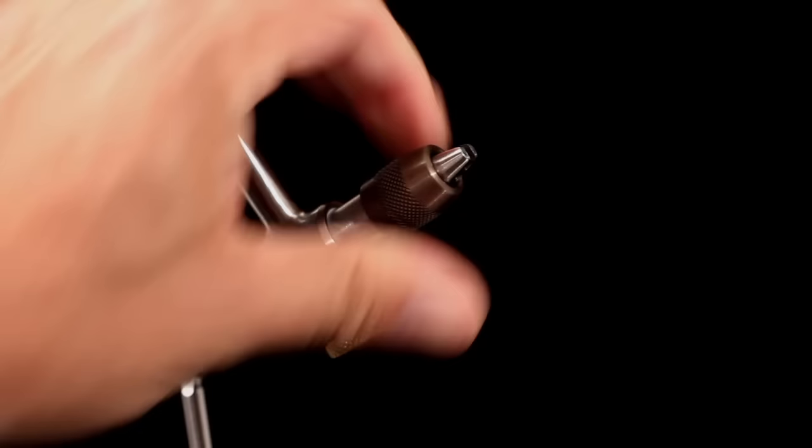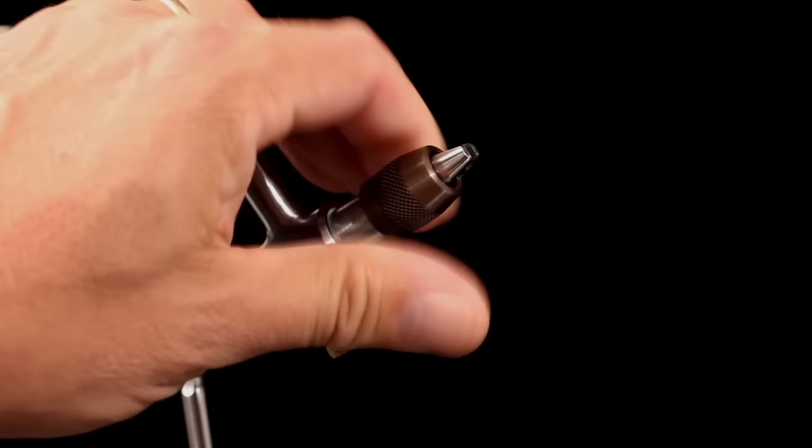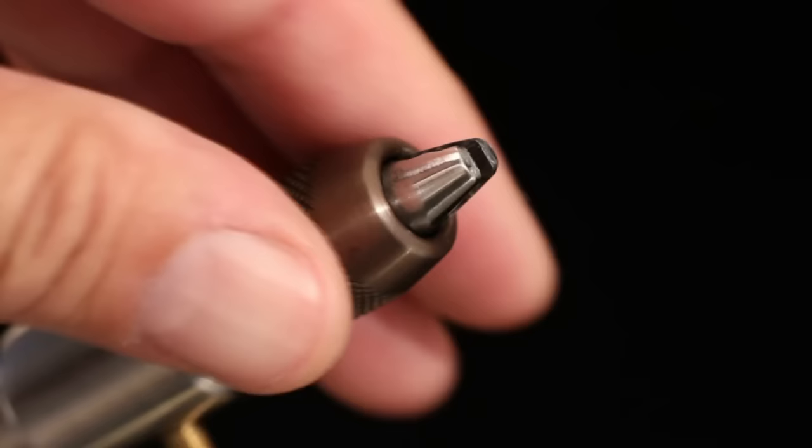With the cam handle lowered, the forcing cone can be turned counterclockwise to reduce tension on the hook, or clockwise to increase it. This is what it looks like up close. Counterclockwise reduces tension.